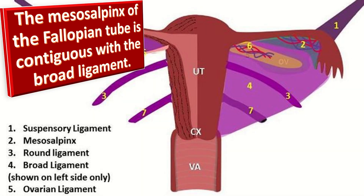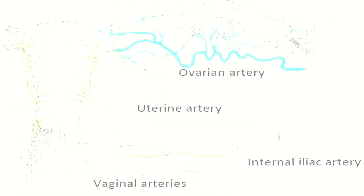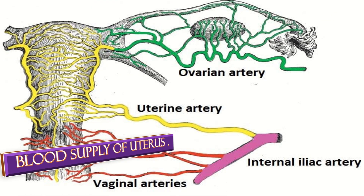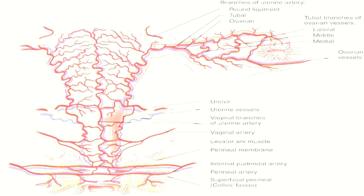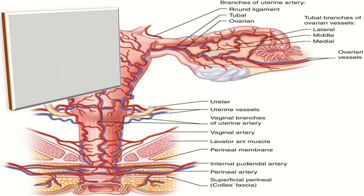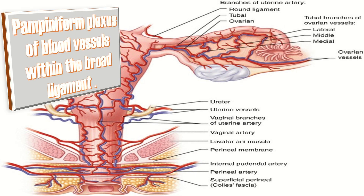The mesosalpinx of the fallopian tube is contiguous with the broad ligament. The primary blood supply to the uterus comes from the uterine and ovarian arteries, which invest most near the upper lateral aspect of the uterus. Several veins form the large pampiniform plexus within the broad ligament, collecting blood from the upper uterus, ovary, and upper part of the broad ligament.